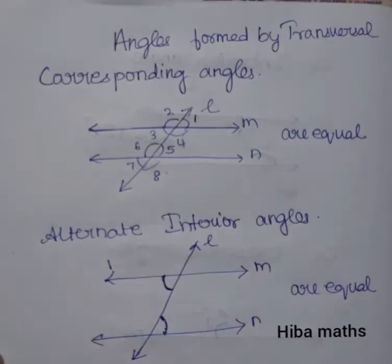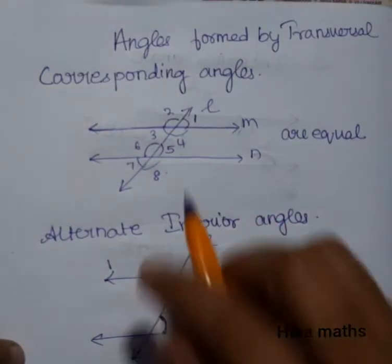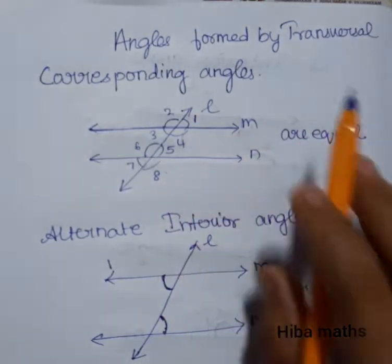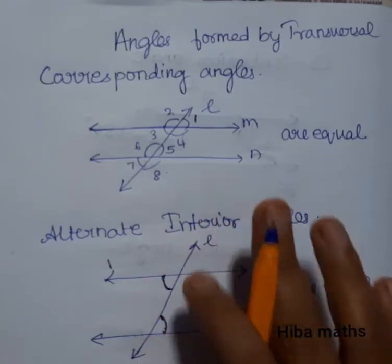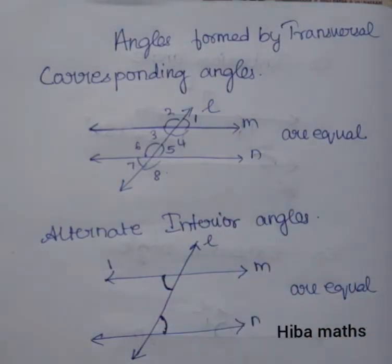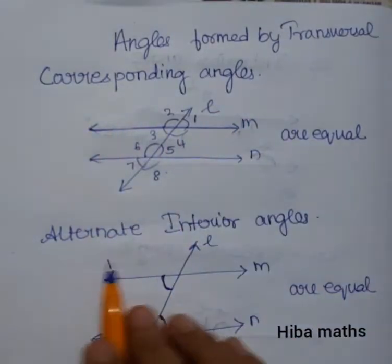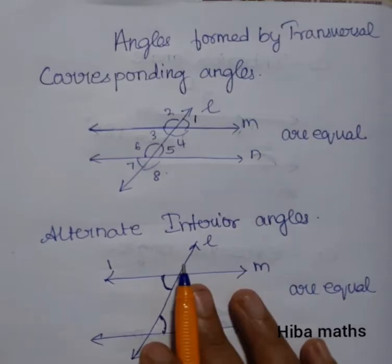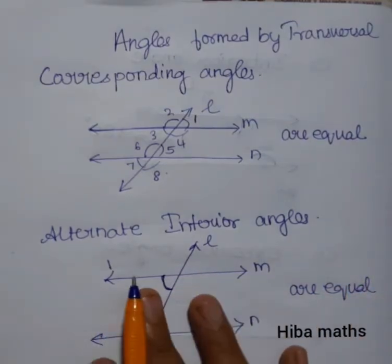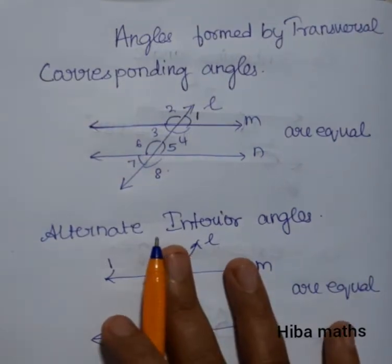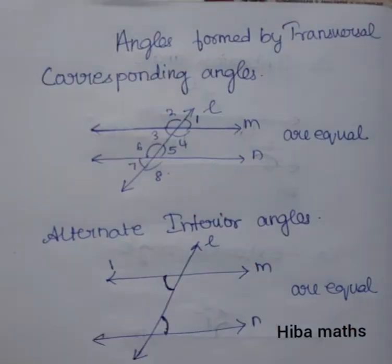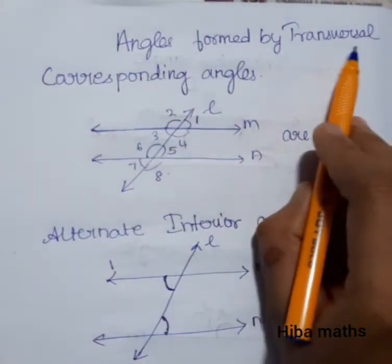Hello everyone, welcome to our channel Hibamaks. In this video, we will talk about angles formed by a transversal. This is the 7th standard, 5th chapter. We will talk about corresponding angles, alternate interior angles, alternate exterior angles, and co-interior and co-exterior angles. If you are here for the first time, subscribe to our channel and click the bell icon so you will be notified of new videos.